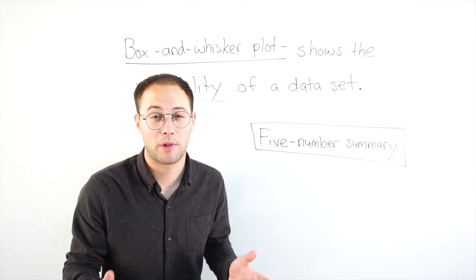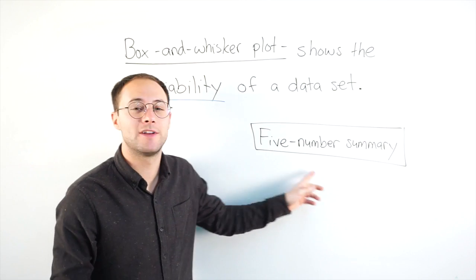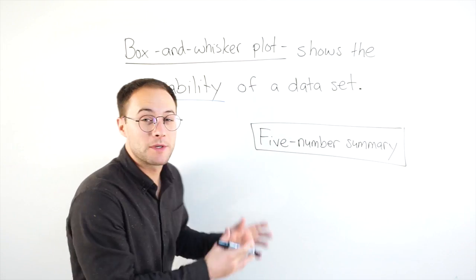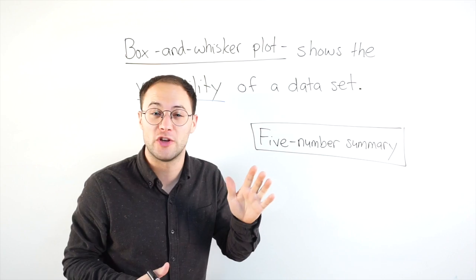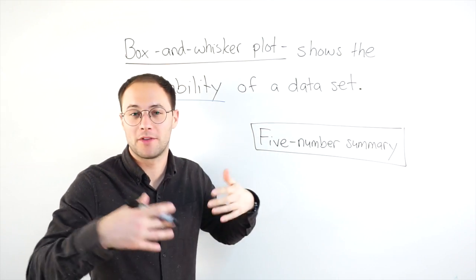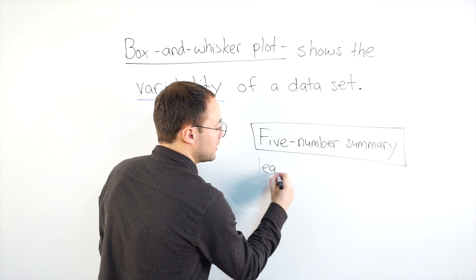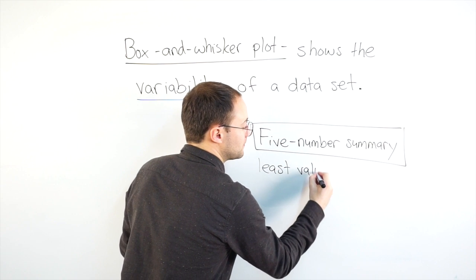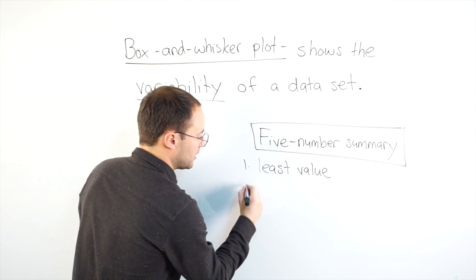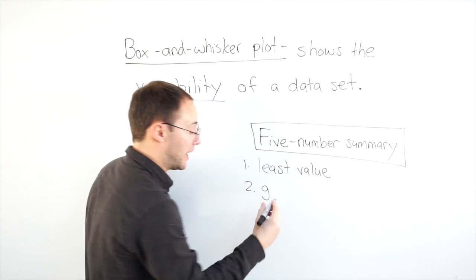To make a box and whisker plot, you need something called a five number summary. The five number summary is all five measures or values that you need to have to be able to make that box and whisker plot. First, you need to know the least value. That's one. You need the greatest value as well.